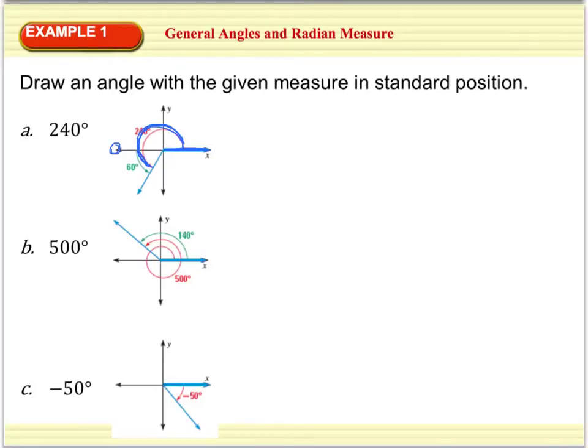Now for part B, if I start on my initial ray right here, I'm going to have to go around one full revolution to hit 360, plus another 140 degrees more to hit 500. So my 500 degree angle is a full revolution, plus another 140 degrees, which is the equivalent of a 140 degree angle measure as well.